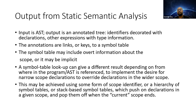A symbol table consists of a lookup that can give a different result depending on from where in the program or abstract syntax tree it is referenced. This is done to implement the desire for narrow scope declarations to override declarations in a wider scope. The symbol table provides additional information to the abstract syntax tree so you can determine where variables are within a certain scope or what type they are. Scope and type can both be determined using the symbol table.